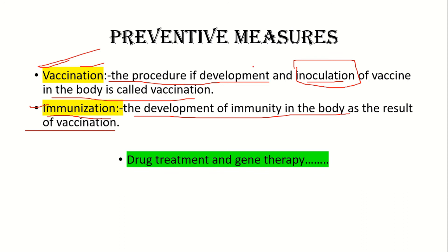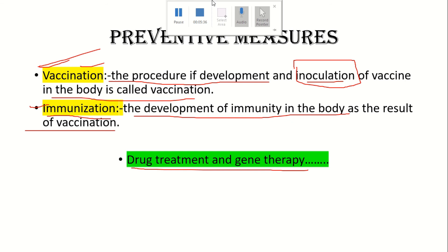This was all about different diseases control by preventive medication and immunization. The third step is drug treatment and gene therapy, which we will discuss in the next lecture. If you like this video, kindly share it with your friends and subscribe to my channel, Biological World. Thank you so much.